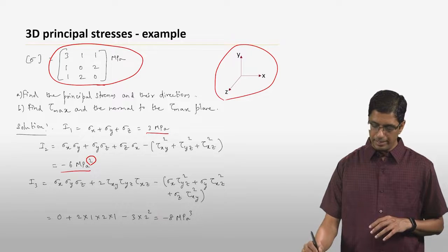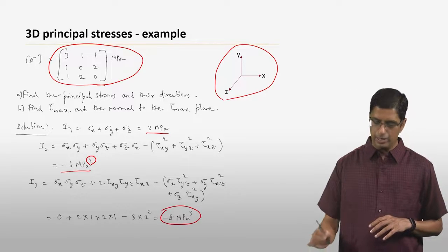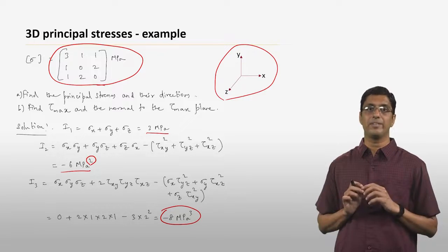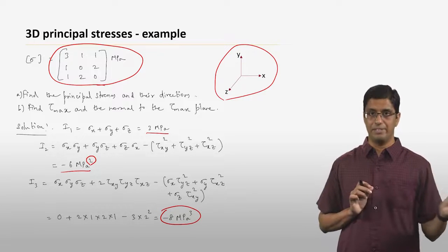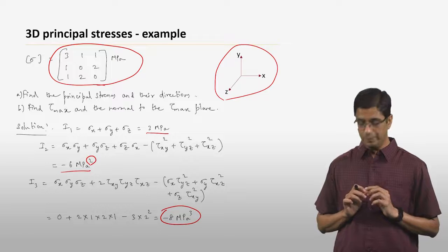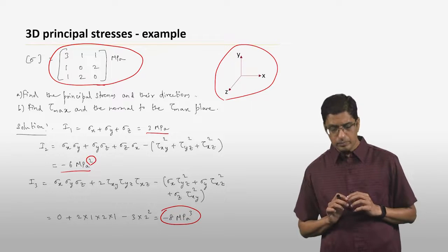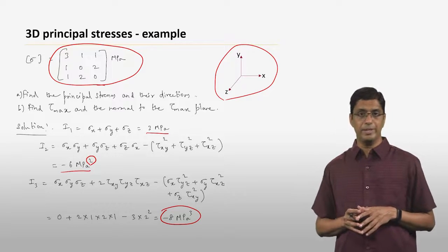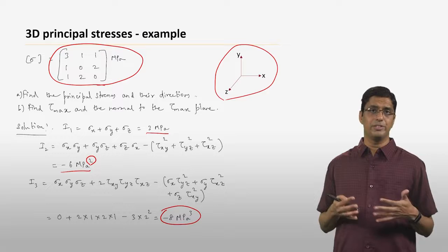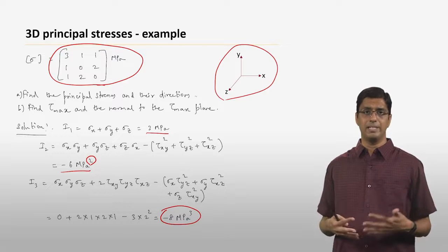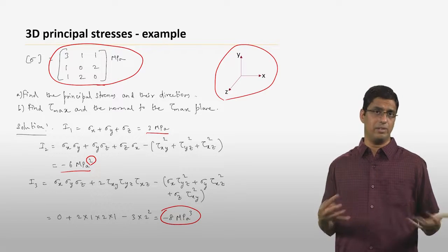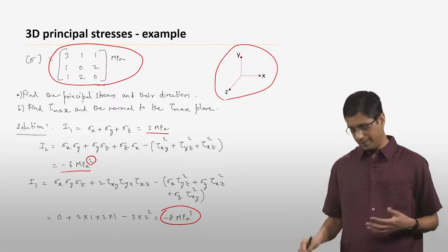i3 turns out to be minus 8 MPa cubed. So i1, i2, and i3 have different units. Then essentially you plug these values into the characteristic equation and solve it.